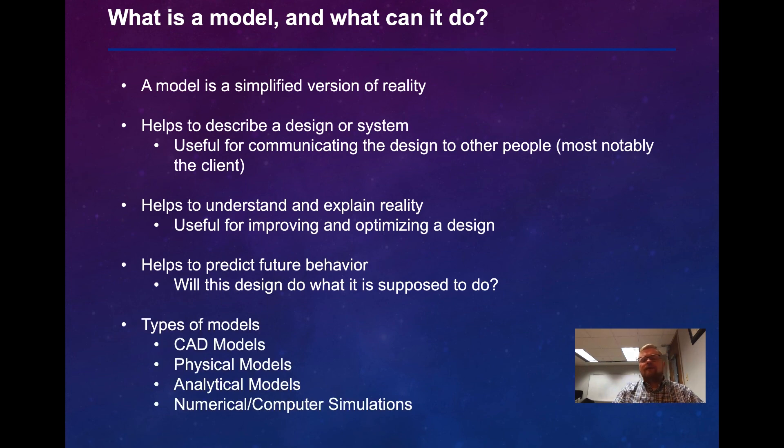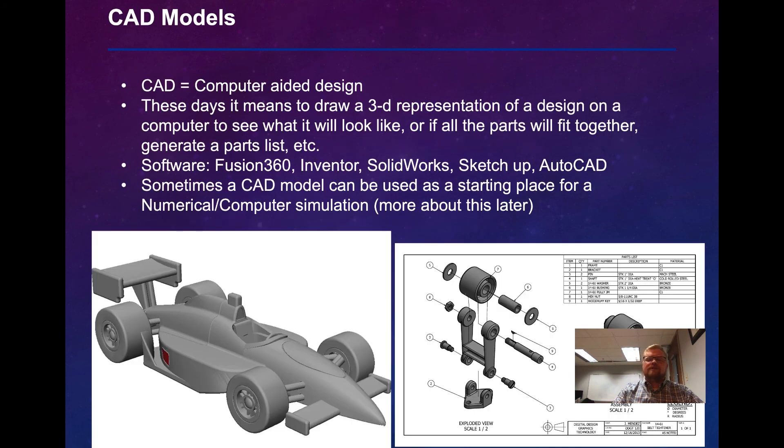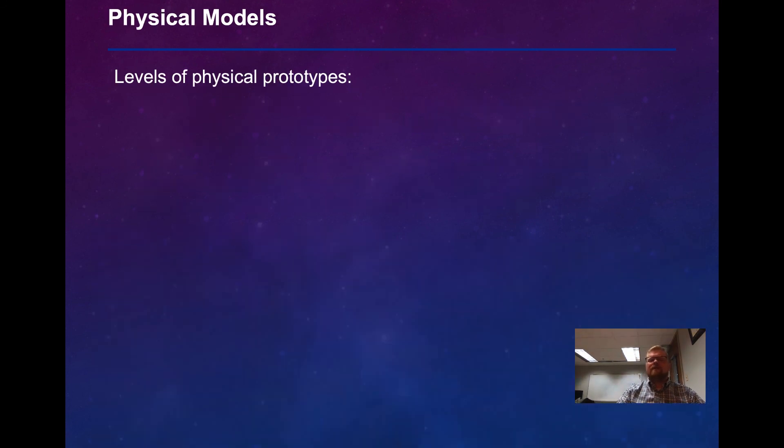Like I said, there are CAD models, physical models, analytical models, numerical, and computer simulations. CAD, computer-aided design, is typically a 3D representation of a design on a computer. There's things like Fusion 360, Inventor, SolidWorks, SketchUp, AutoCAD, Creo, and so on. Sometimes a CAD model can be used as a starting place for a simulation, and we'll talk more about this in a little bit.